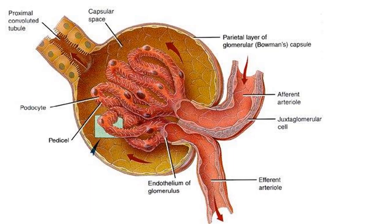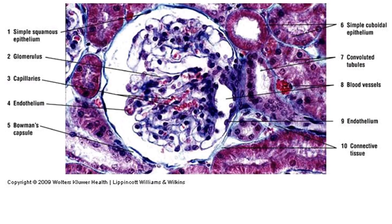Large molecules like proteins cannot get through the glomerulus. If you have protein in your urine, you have some sort of kidney damage - it simply shouldn't be there, and there is a test for protein in the urine. Under the microscope, with purple staining, you can make out individual red blood cells and the Bowman's capsule as a white semicircle, allowing you to identify these structures in a microscope image.